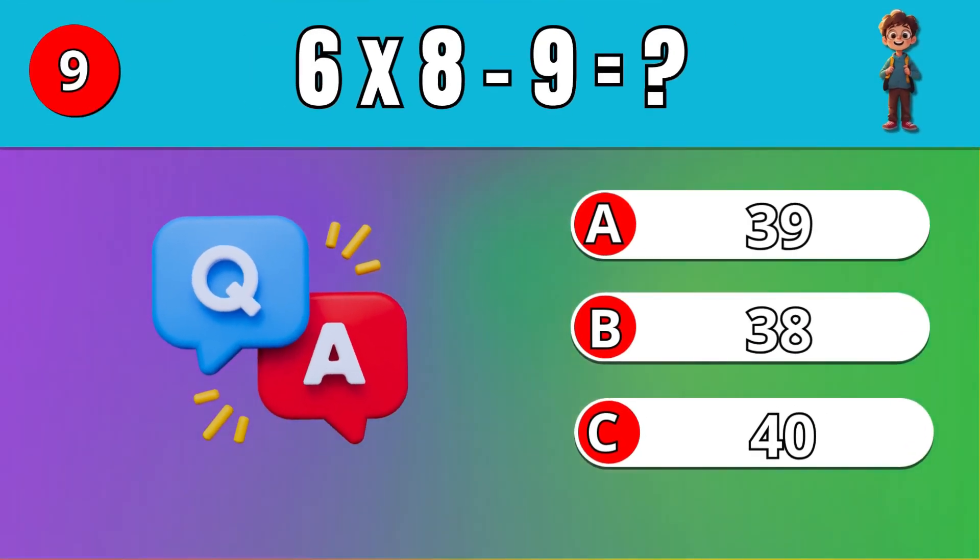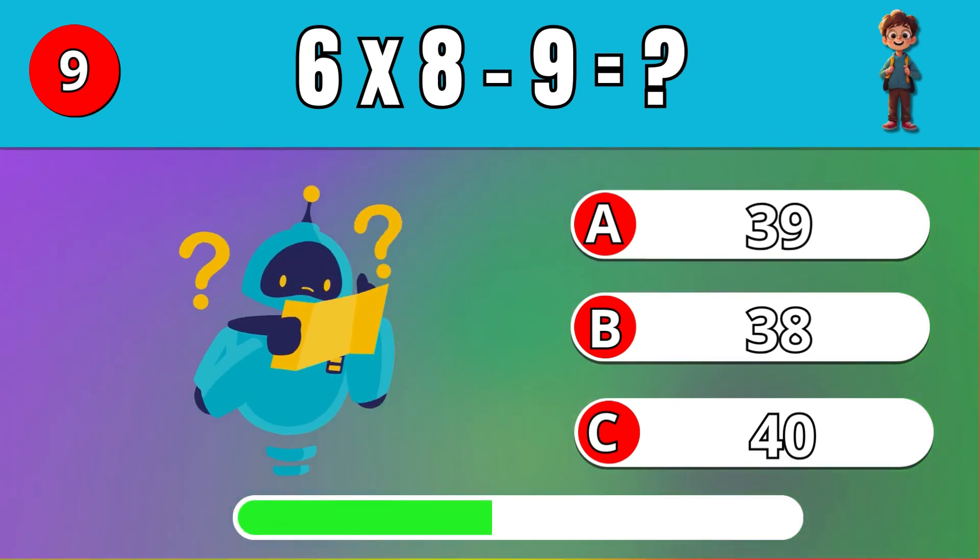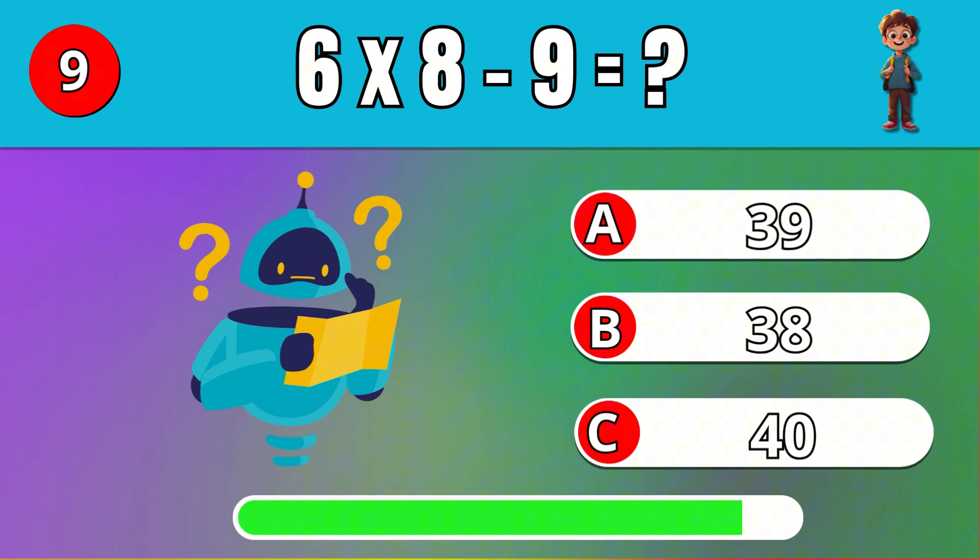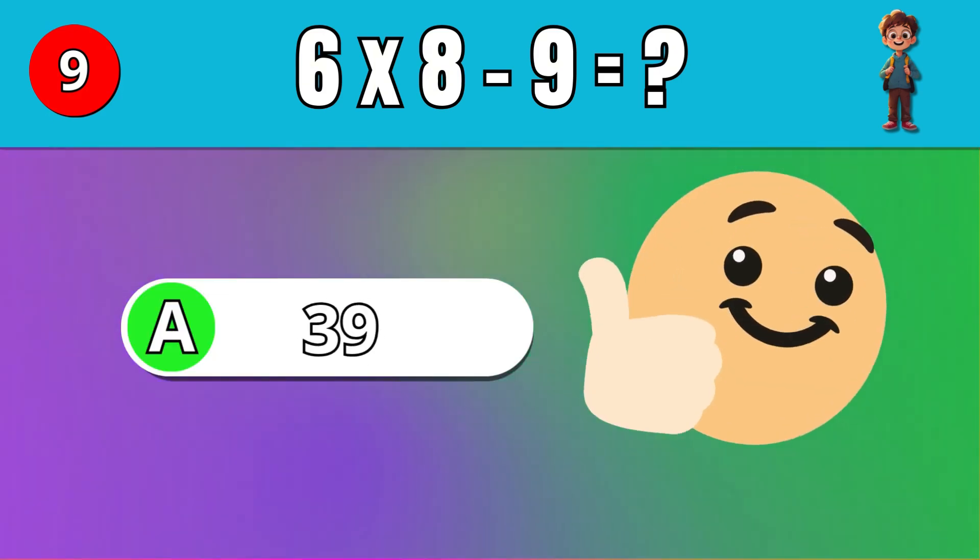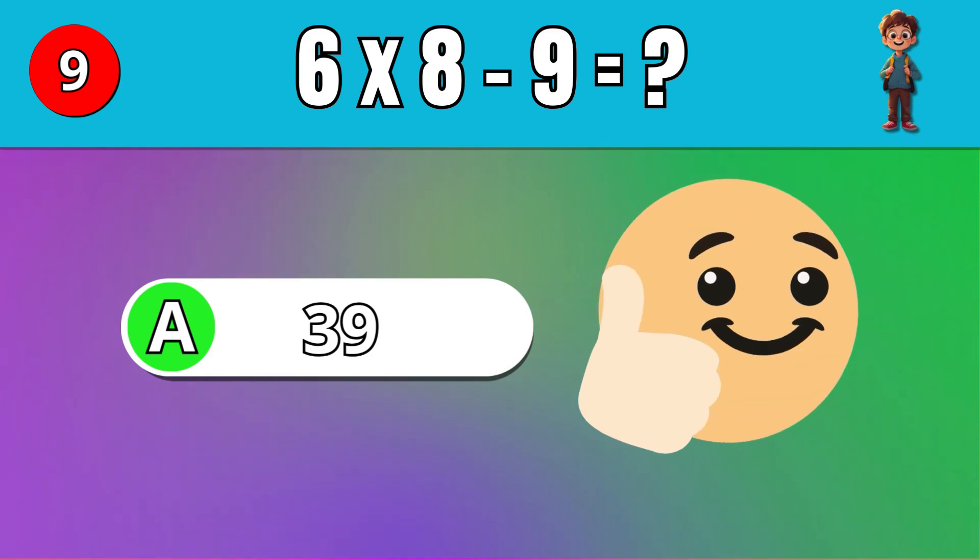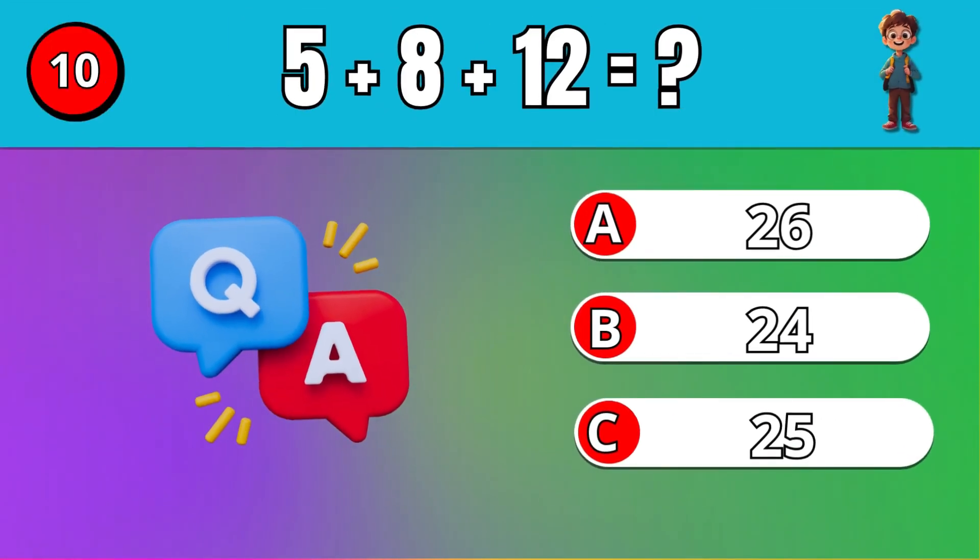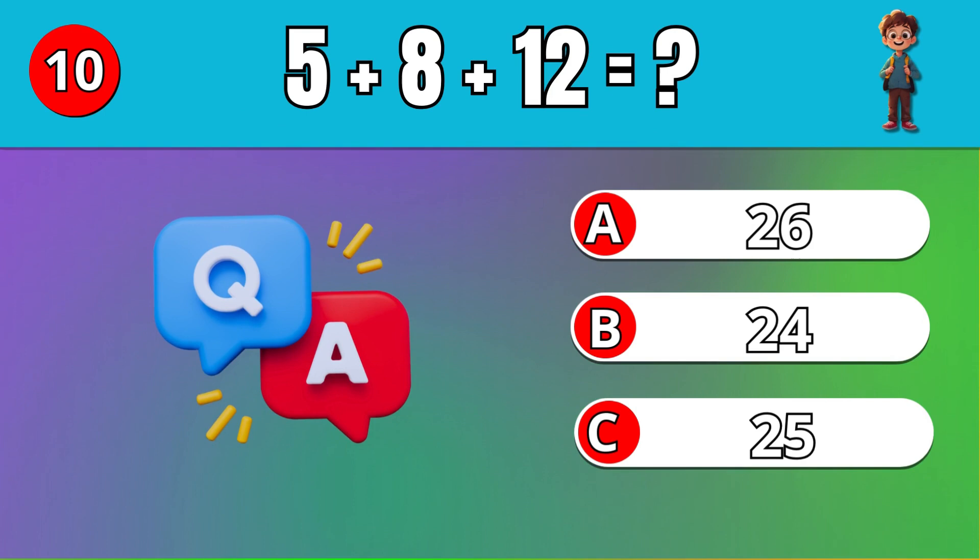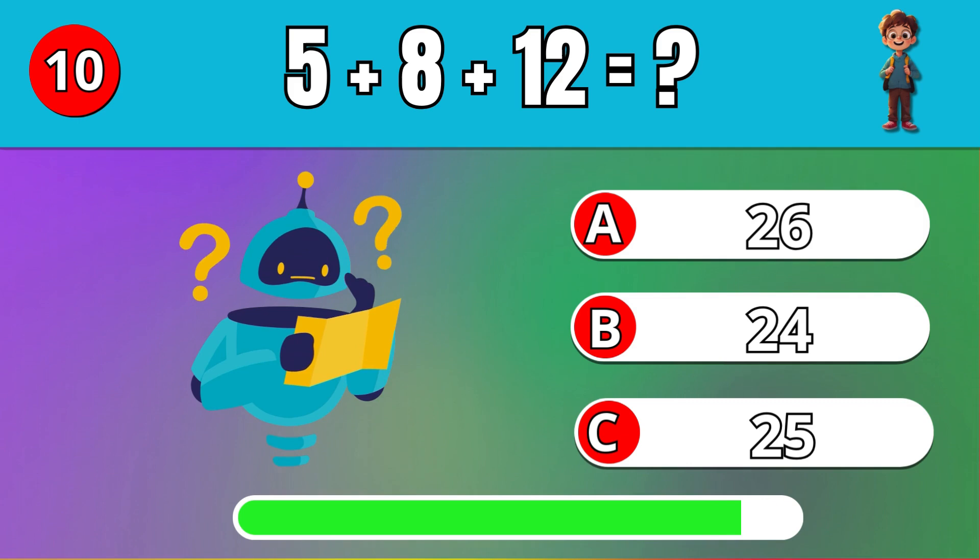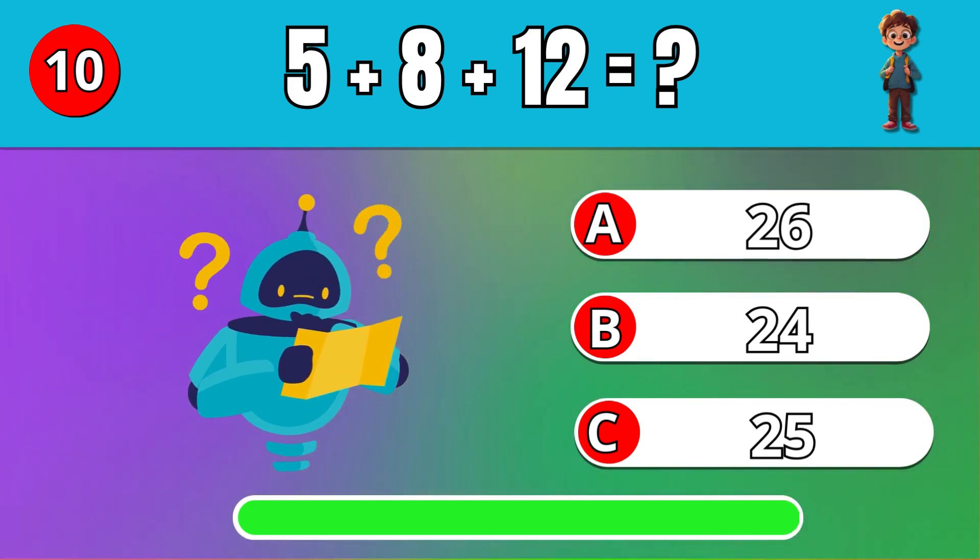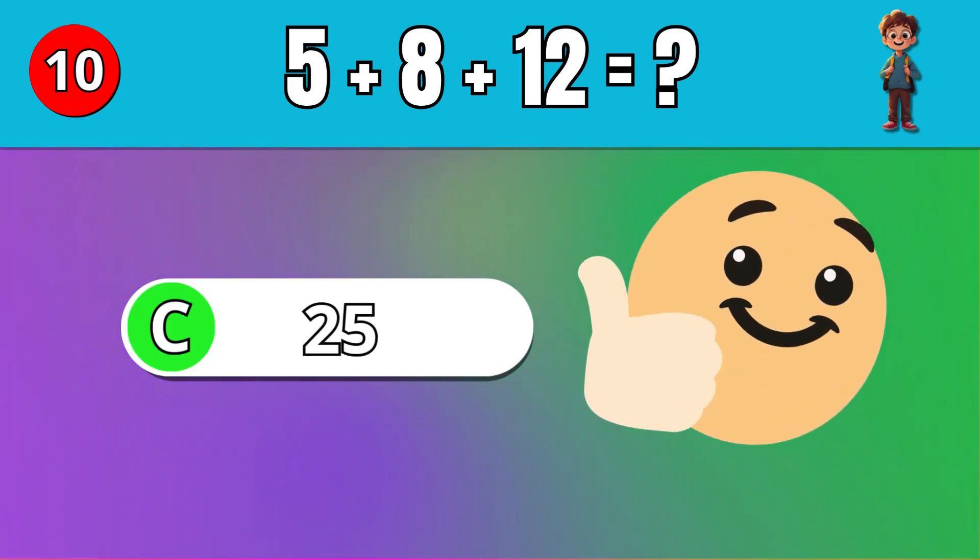What is 6 times 8 minus 9? A, 39. What is 5 plus 8 plus 12? C, 25.